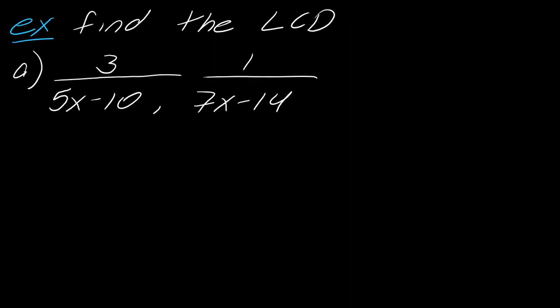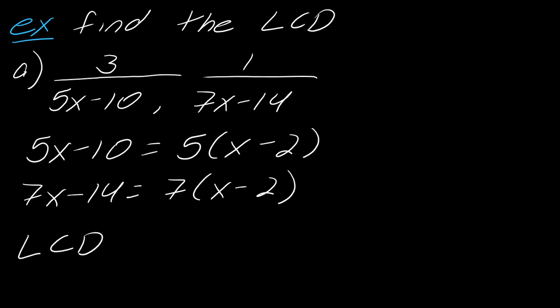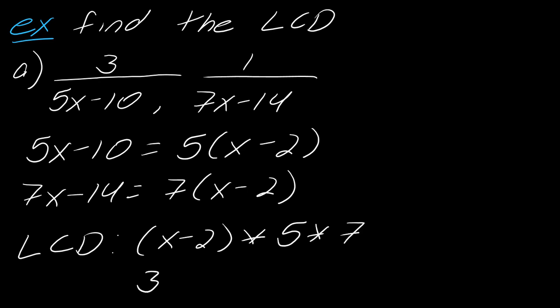Next example: 5x − 10 factors as 5(x − 2), and 7x − 14 factors as 7(x − 2). This one is a slightly different type of polynomial. What they have in common is (x − 2), and what they don't have in common is 5 and 7. So the LCD is 35(x − 2). You don't need to distribute that — you can just leave it as is.